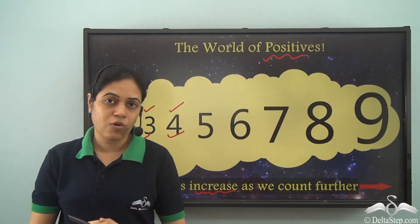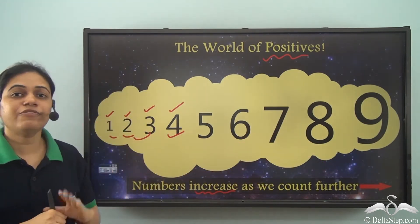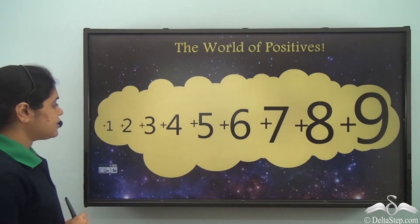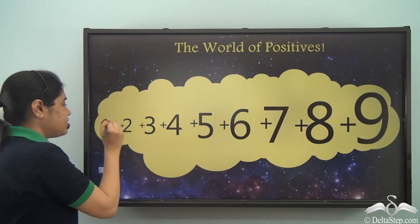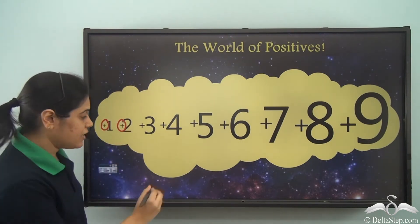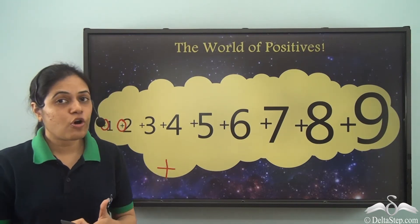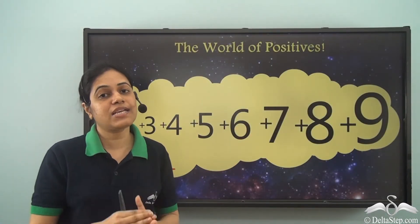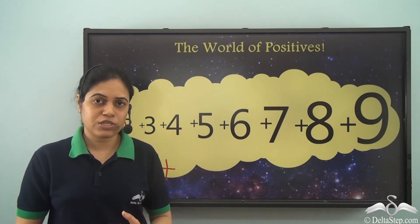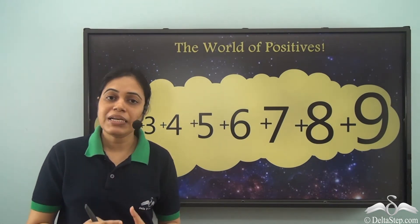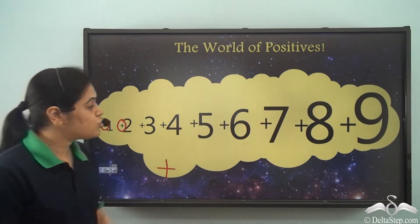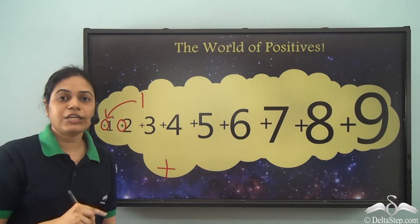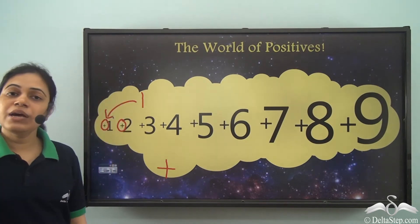The numbers we have learnt till now starting from 1 have a secret sign hidden — this sign, the plus sign. We know it as the plus sign, and it is also called the positive sign. So all these numbers actually have a positive sign in front of them. We never write this positive sign — it is hidden but it is still there. So 1 is actually positive 1.